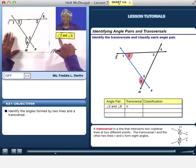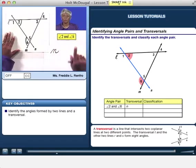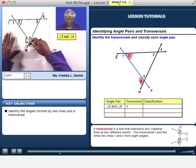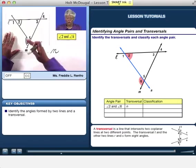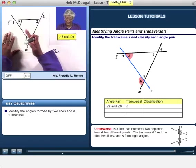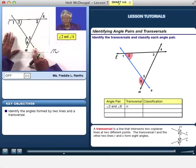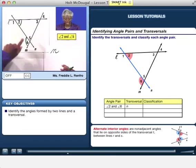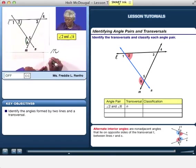Now, let's classify these angles by name. Well, remember, any time you have two angles, here's the transversal, where they are on opposite sides of the transversal, they're called alternate interior angles. So angles 2 and 6 are alternate interior angles.